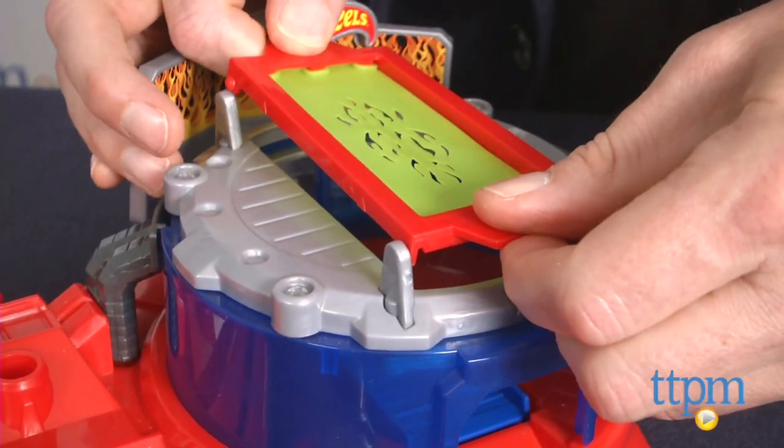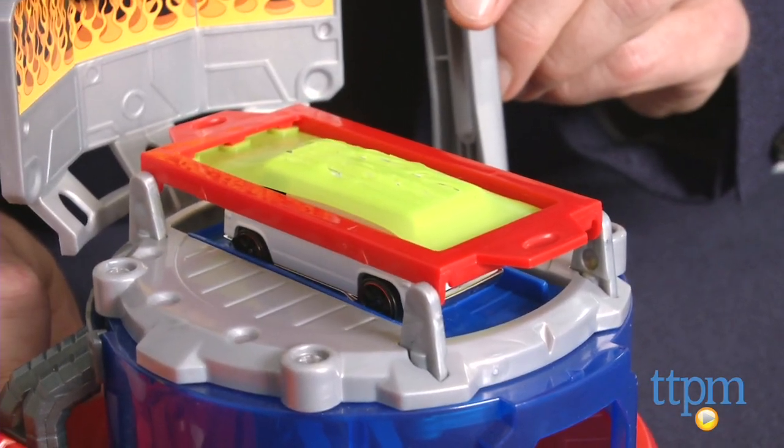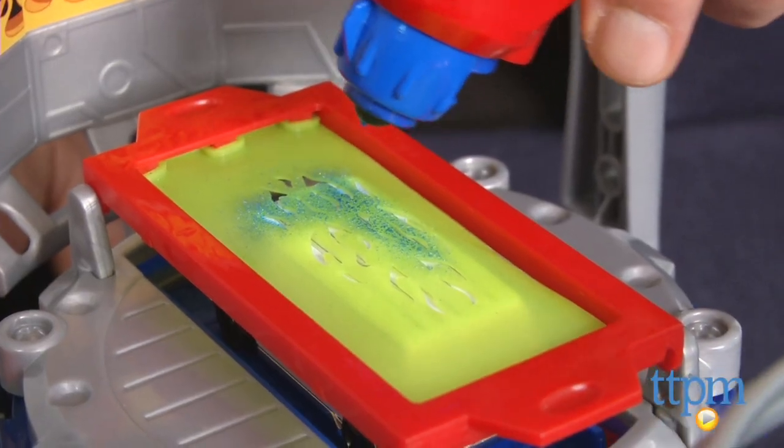Then, insert a stencil in the masking frame, put the car into the chamber, and raise it. Make sure the flexible stencil fits snugly over the car and spray.